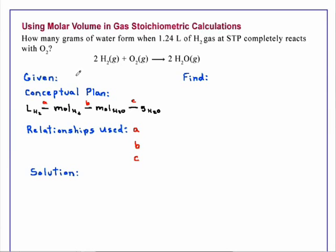We're given a balanced equation in addition to the information in the stem. Given that we have 1.24 liters under STP conditions, that's standard temperature and pressure,